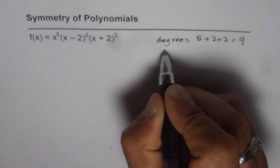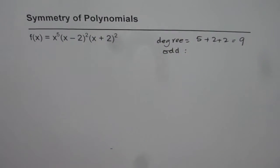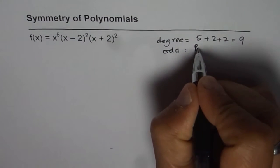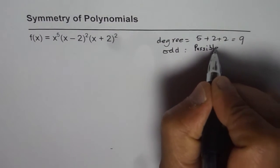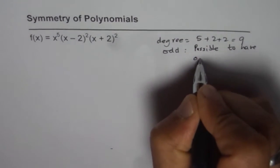We know the degree is odd. So there is a possibility that this function could have odd symmetry. It is not a must, but it is possible to have odd symmetry.